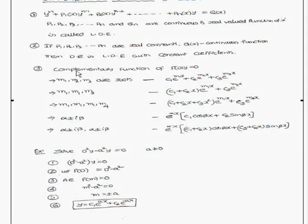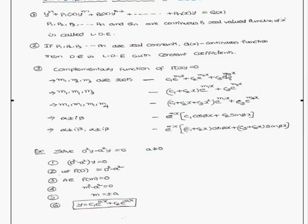Now we are going to find out the complementary function and how we can find it. If the differential equation is f(D)·y = 0, and the roots are m1, m2, m3 (distinct roots), then the complementary function is c1·e^(m1·x) + c2·e^(m2·x) + c3·e^(m3·x).